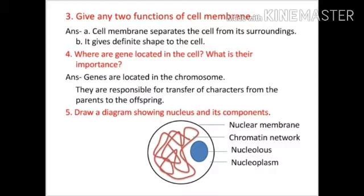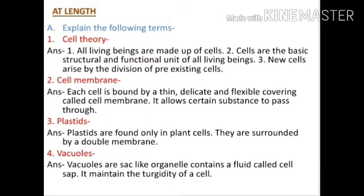Question five: draw a diagram showing the nucleus and its components. As shown in the slide, the outer covering of the nucleus is the nuclear membrane. Inside it, a clumpy brownish structure called the chromatin network is present. There is also a spherical structure called the nucleolus, and the fluid inside is called nucleoplasm.